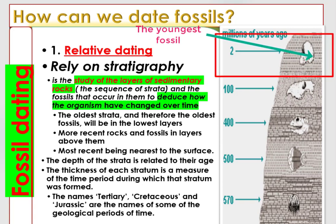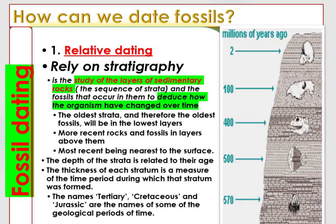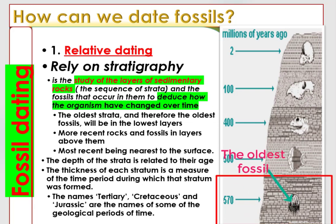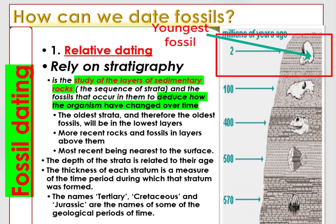The most recent sediments and fossils exist nearest to the surface of the sedimentary rock. The depth of the strata is related to their age, and the thickness of each stratum is a measure of the time period during which that stratum was formed. As seen from the diagram, the fossil in the lowest layer is the oldest, while the fossil nearest the surface is the youngest or most recent relative to the others.